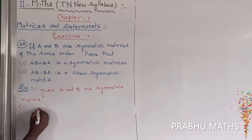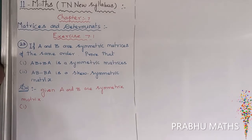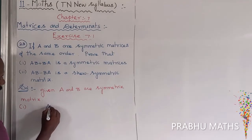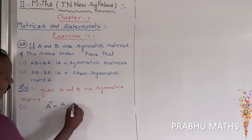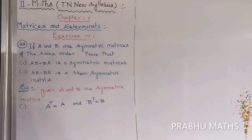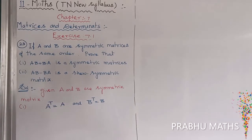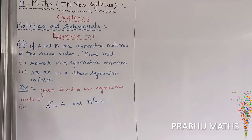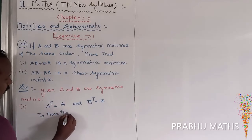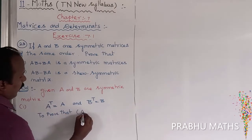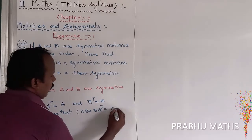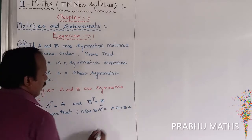For the first subdivision, the condition for a symmetric matrix is A transpose equal to A. So the given conditions are: A transpose is equal to A, and B transpose is equal to B. Next, we need to prove that AB plus BA the whole transpose is equal to AB plus BA, which proves AB plus BA is a symmetric matrix.